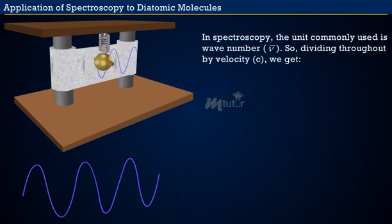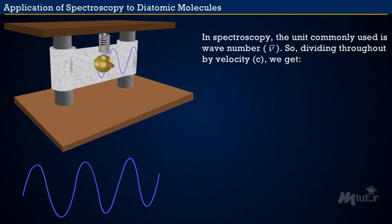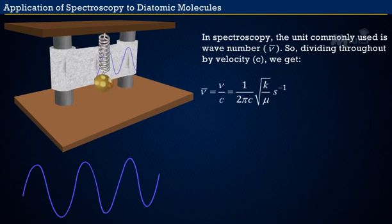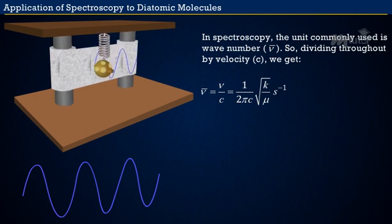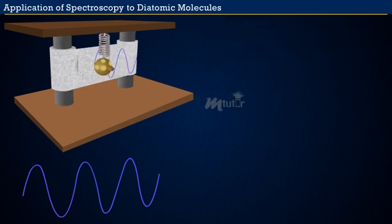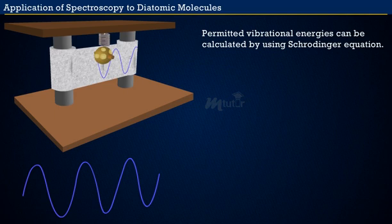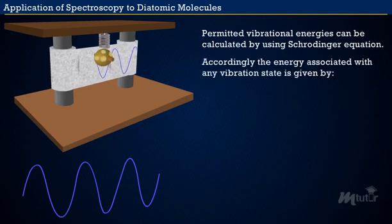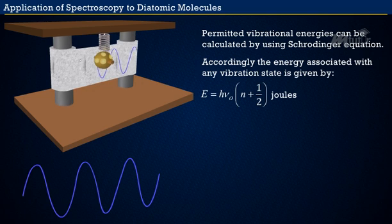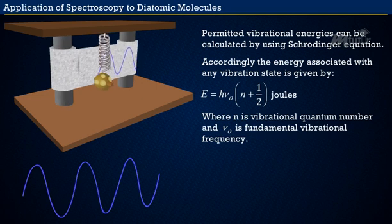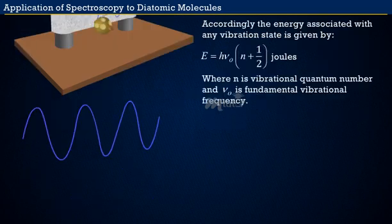In spectroscopy, the unit commonly used is wavenumber. Dividing throughout by the speed of light c, we get: wavenumber nu-bar equals 1 over 2 pi c times the square root of k over mu, in inverse centimeters. Like all molecular energies, vibrational energy is quantized. Using the Schrödinger equation, the energy associated with any vibrational state is: E equals h·nu₀ times (N plus 1/2) joules, where N is the vibrational quantum number and nu₀ is the fundamental vibrational frequency.